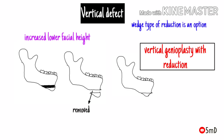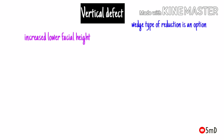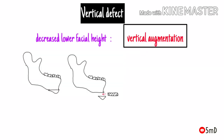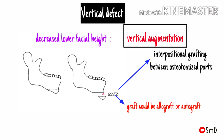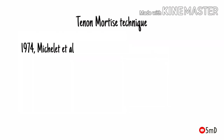When vertical movement alone is required without anteroposterior movement, vertical reduction or augmentation can be used accordingly. When there is decreased lower facial height, vertical augmentation is indicated. This is accomplished by interpositional grafting using either alloplastic material or autograft placed between the osteotomized segments.